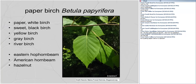Paper birch is in the genus Betula, family Betulaceae, species papyrifera — paper birch or white birch. Other birches in the eastern US include sweet birch or black birch (Betula lenta), yellow birch (Betula allegheniensis, previously Betula lutea), gray birch (Betula papylifolia), and river birch (Betula nigra). In the same family is eastern hop hornbeam in the genus Ostrya, American hornbeam in the genus Carpinus, and hazelnut in the genus Corylus.